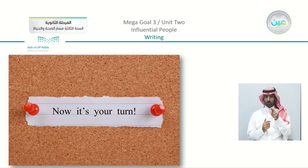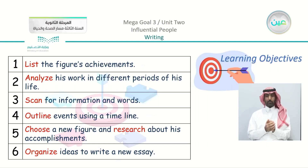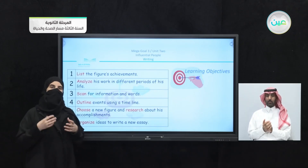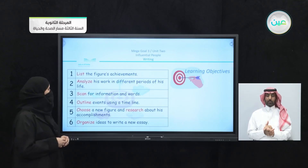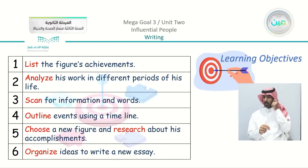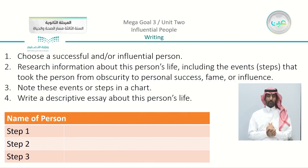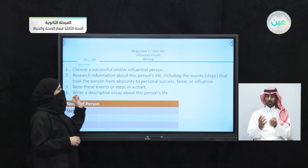So now it is your turn — you are going to start your essay. We have our objectives: to list the figure's achievements, analyze his or her work in different periods of their life, scan for information and words, outline events using a timeline, choose a new figure and research their accomplishments, and organize your ideas to write a new descriptive essay. We are going to choose an influential person, research for information, and write a descriptive essay.